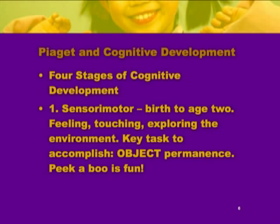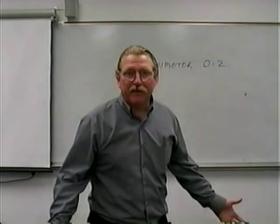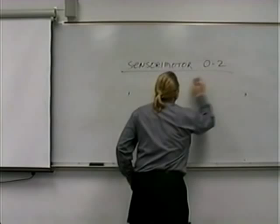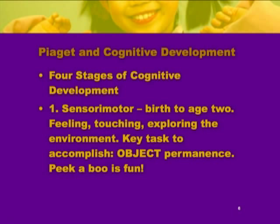In the sensorimotor stage, about birth to two, the kids' primary tasks are tasting everything, touching things, trying to explore their environment. They're looking around, pushing peas off their dinner plate onto the floor and watching them drop. They're learning what's happening between the sensations coming into them and their motor output. The first time a little kid grabs its toe and bites it and realizes 'I just bit myself' — that's sensorimotor. One of the key things that happens in this stage is peek-a-boo. Before a certain age, it's not a very fun game. But it becomes extremely fun when you put something in front of you and disappear, and the kid just laughs when you reappear.